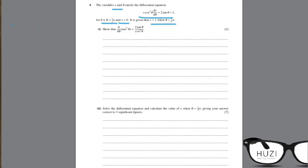Show that the differential of tan squared theta equals 2 tan theta upon cos squared theta. Using the chain rule, this would be 2 tan theta multiplied by the differential of tan theta, which is sec squared theta. So this finally becomes 2 tan theta upon cos squared theta.